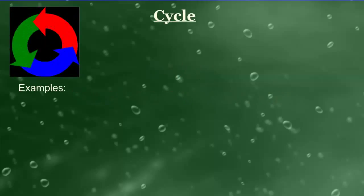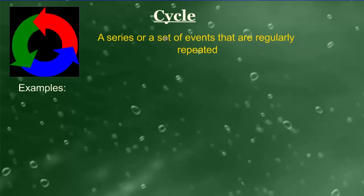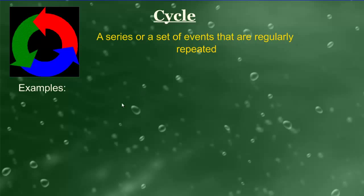We start off with the word cycle. A cycle refers to a series or a set of events that are regularly repeated. The picture right there represents a cycle — a constant repeating set of events. Some examples that we use in biology: the water cycle, for instance, is a set of events that are regularly repeated.